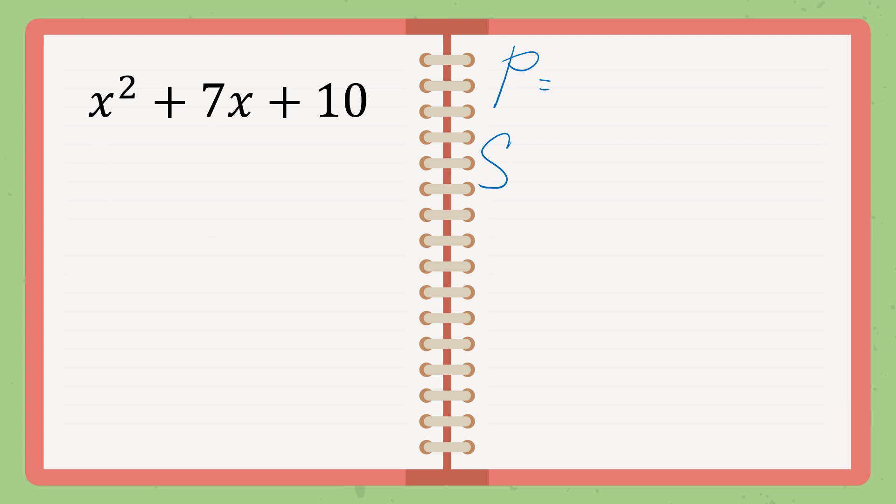So P, as you can see X squared, we have here an imaginary 1. So we will just multiply 1 and 10 to get P. So it is 10. 10 times 1 is 10. And for S, we will just use the middle and that is 7. Okay, now think of two numbers that when you multiply, the answer is 10. But when you add, the answer is 7.